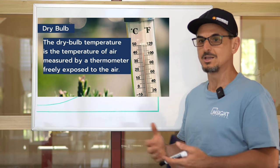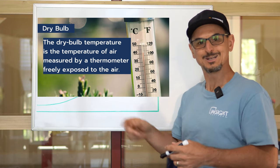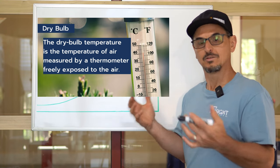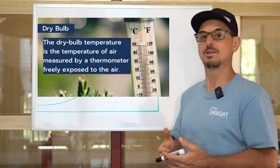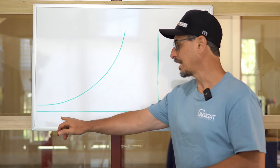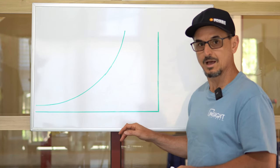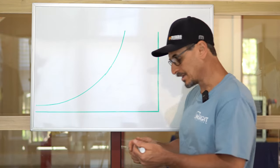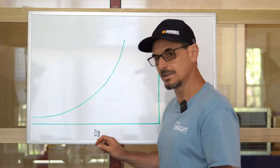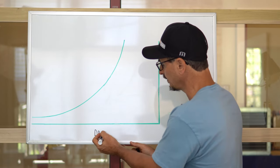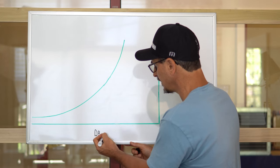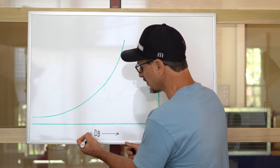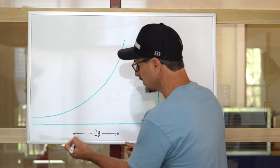We all know what dry bulb temperature is. You walk outside and you've got a little temperature gauge there, a thermometer — that's the dry bulb of the air outside. It has nothing to do with the humidity. It's just looking at what we call the sensible-only temperature in air. The dry bulb quantities are located on the x-axis.